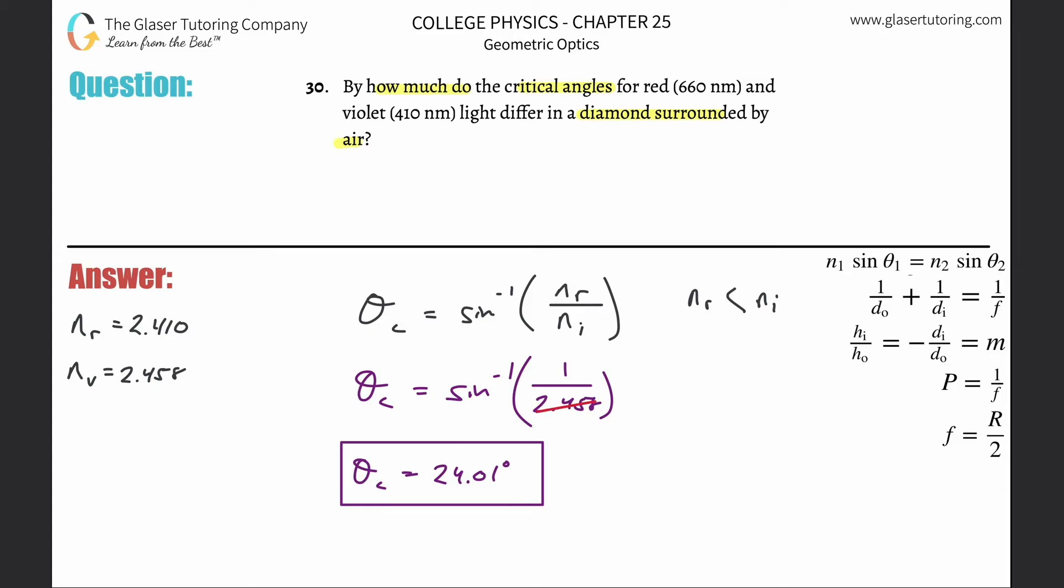For red, just change the number on the bottom and plug in red's index of refraction. The critical angle is inverse sine of 1 over 2.410, which is 24.52 degrees.